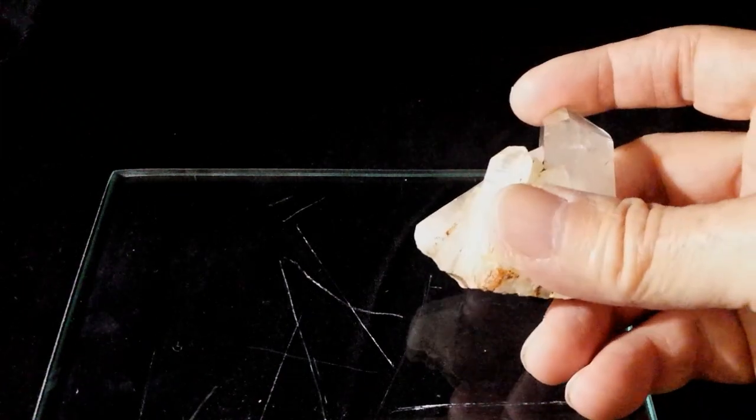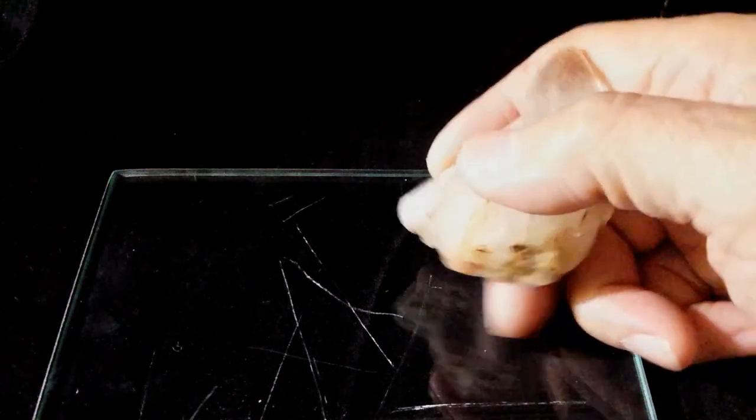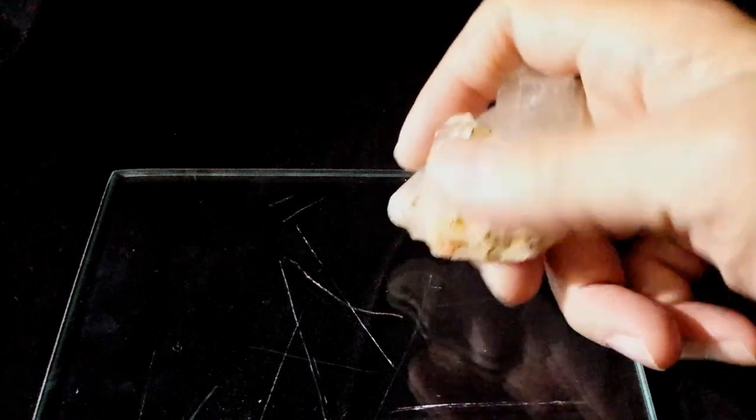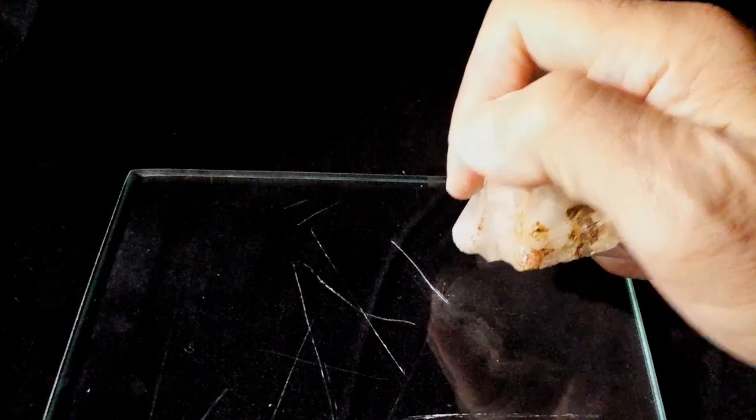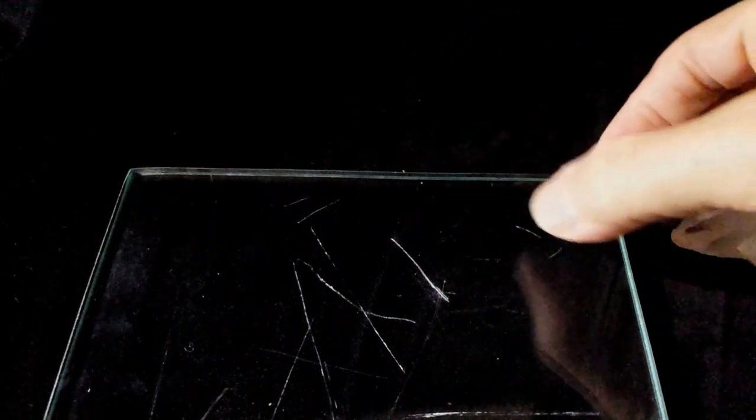Firmly grip the sample. Find a sharp corner or edge. And while you bear down on the plate, scrape the sample against the plate with a short, sharp stroke. Don't saw it back and forth like on a piece of wood.